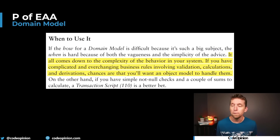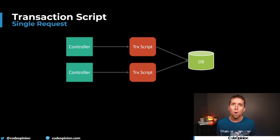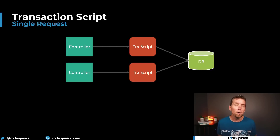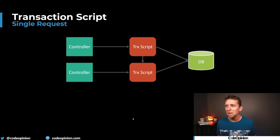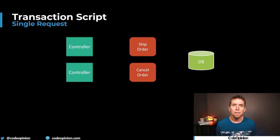This last point is very important: if you have simple null checks or trivial validation and a couple of sums to calculate, a transaction script is a better bet. Transaction scripts are for handling simple requests — they might just interact with your database directly or through a simple abstraction and are generally procedural. Things can go sideways when you have one transaction script that needs to call another, or you're duplicating logic because validation needs to happen between transaction scripts, or you have a lot of duplicate code revolving around state.